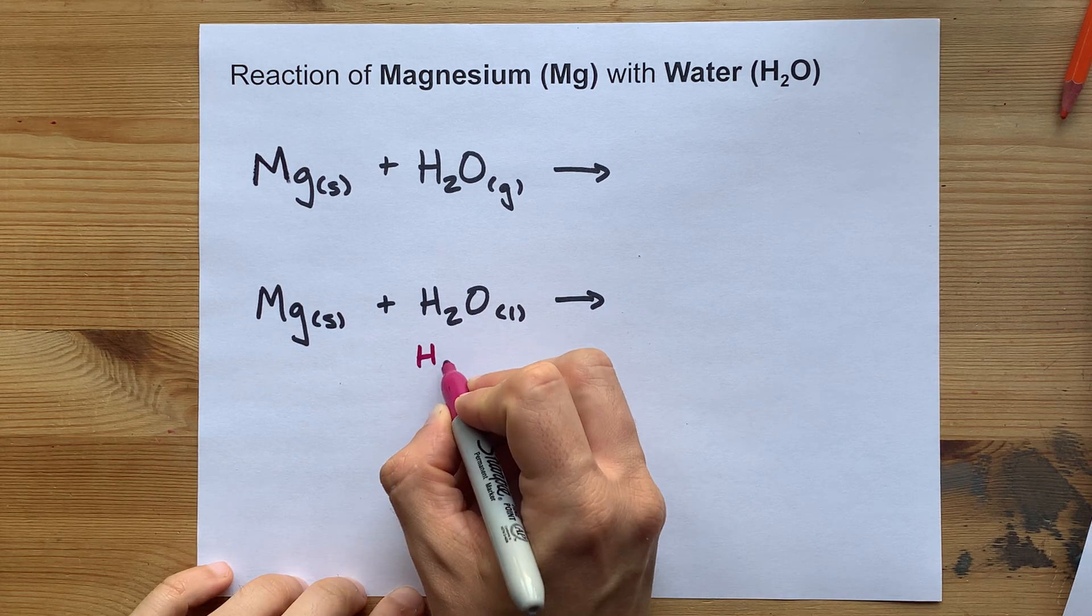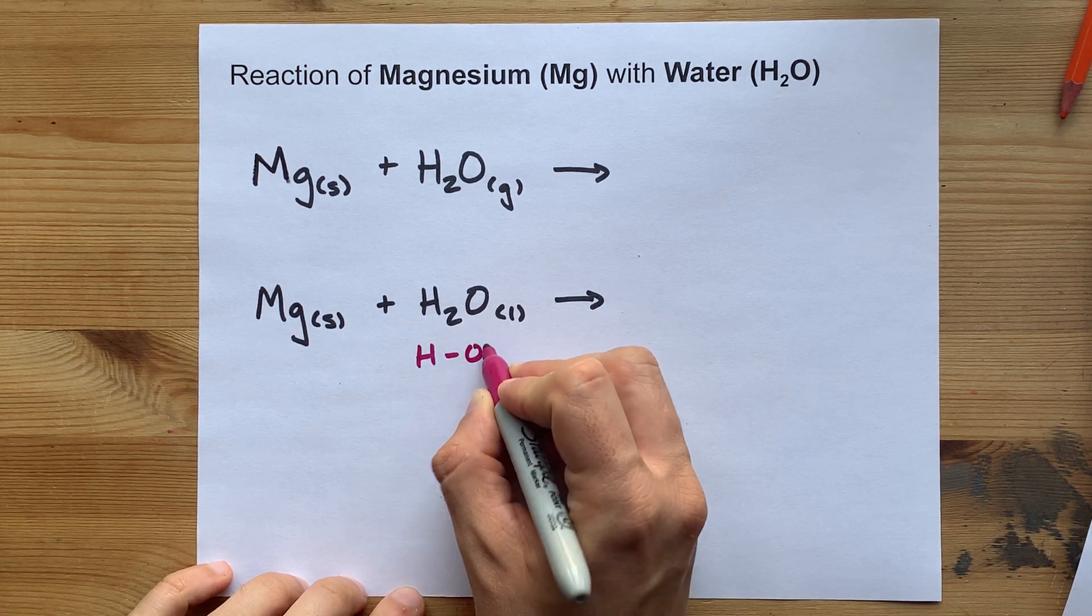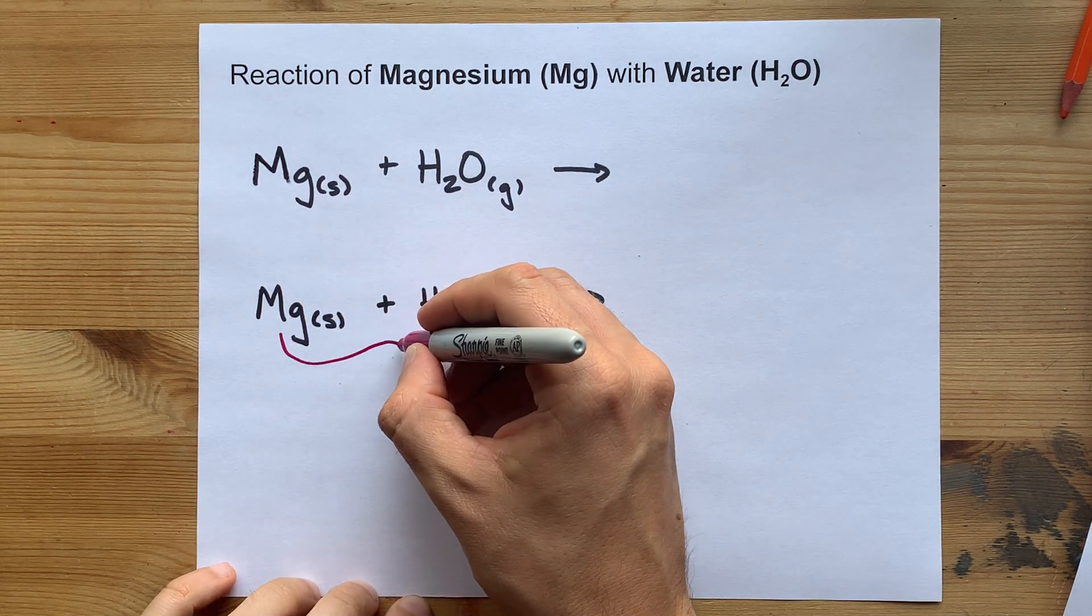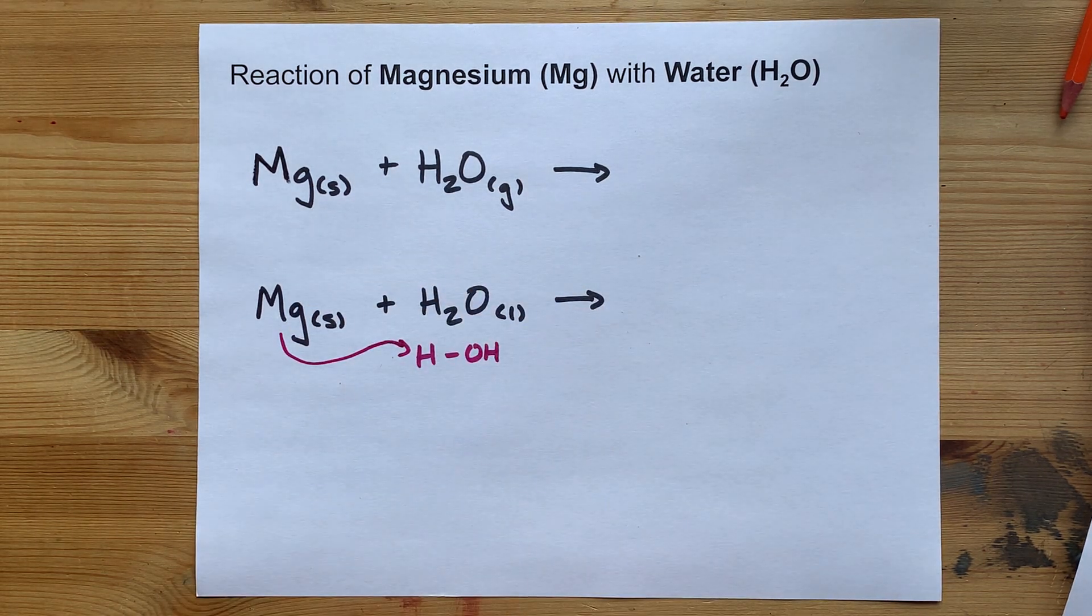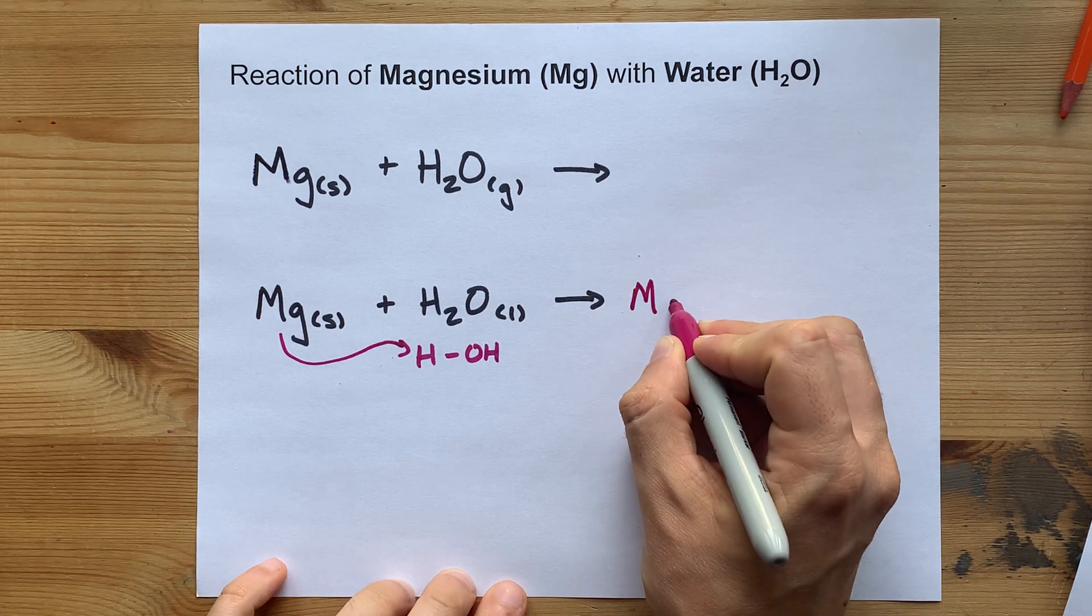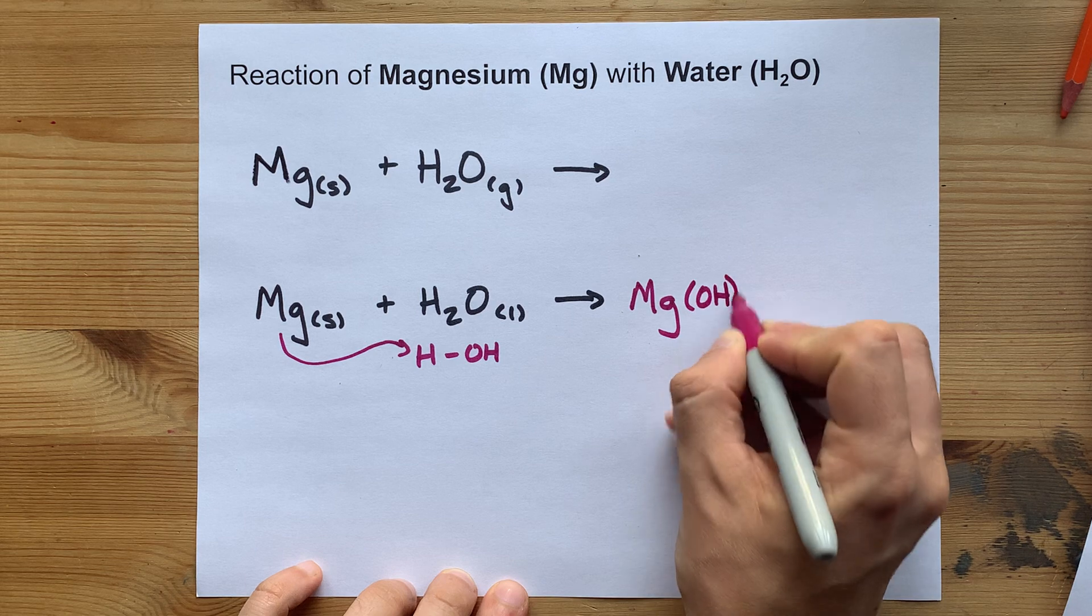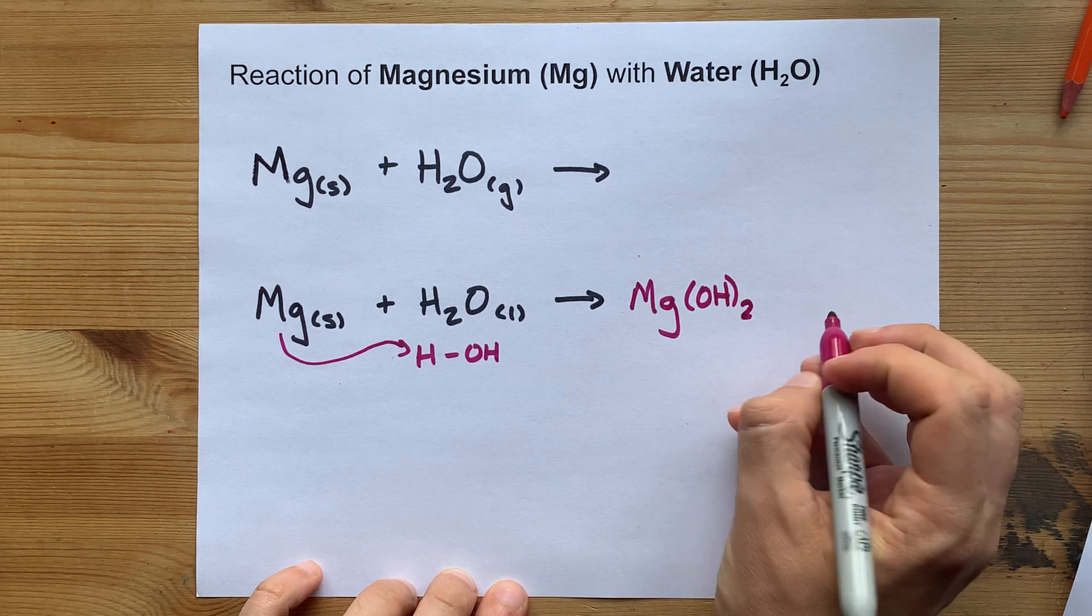The water is like a hydrogen ion connected to a hydroxide anion, and the magnesium can take the hydrogen's place. This will leave you with a magnesium ion paired with hydroxide, which gives you magnesium hydroxide.